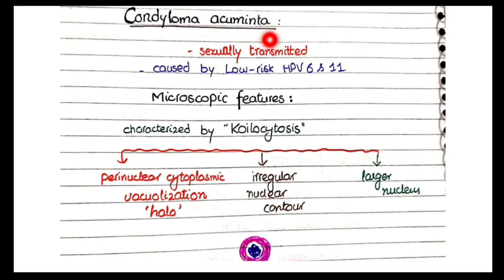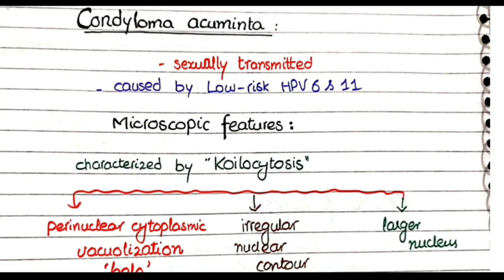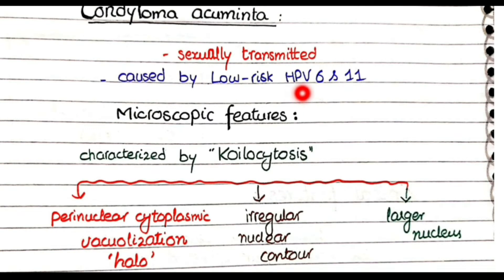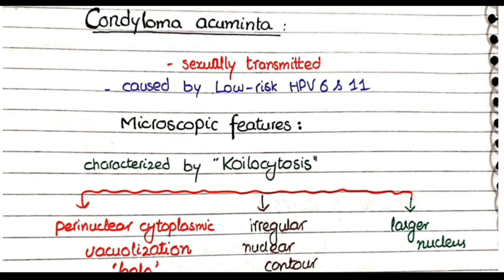Condyloma acuminata is caused by human papilloma virus, and as this organism is sexually transmitted, condyloma acuminata is a sexually transmitted disease. It is caused by low-risk strains of HPV — specifically HPV 6 and HPV 11. Remember that HPV 16 and HPV 18 are high-risk and usually result in neoplasia rather than condylomas. The low-risk variants, HPV 6 and 11, do not result in neoplasia; they result in condyloma acuminata.